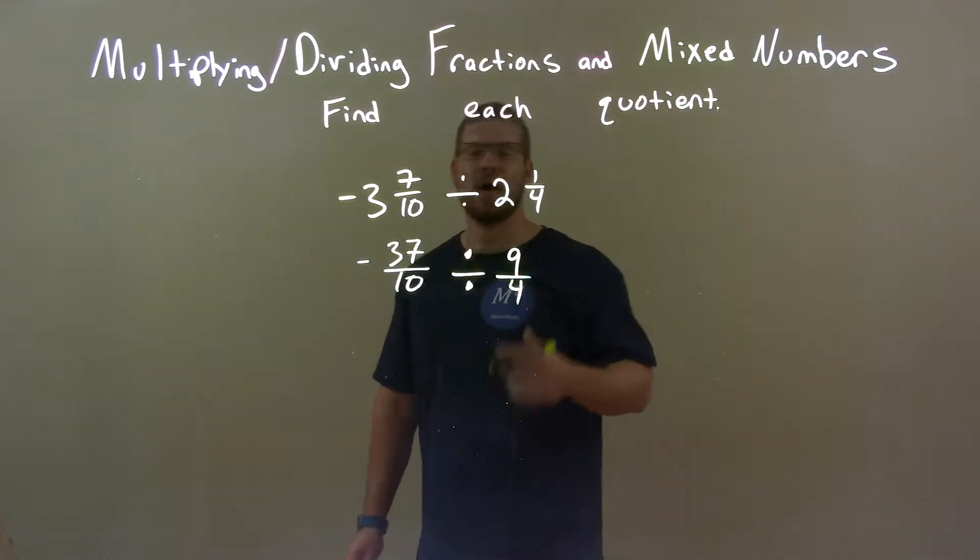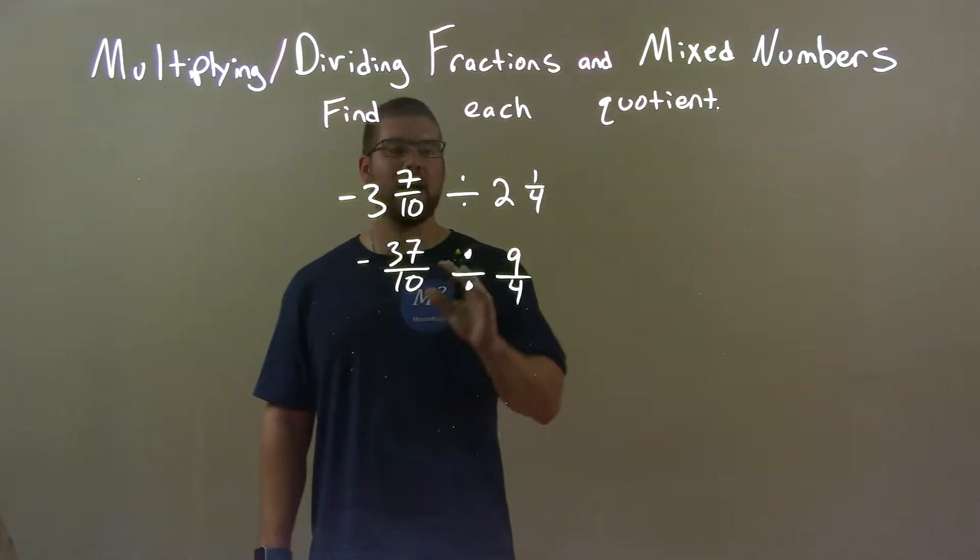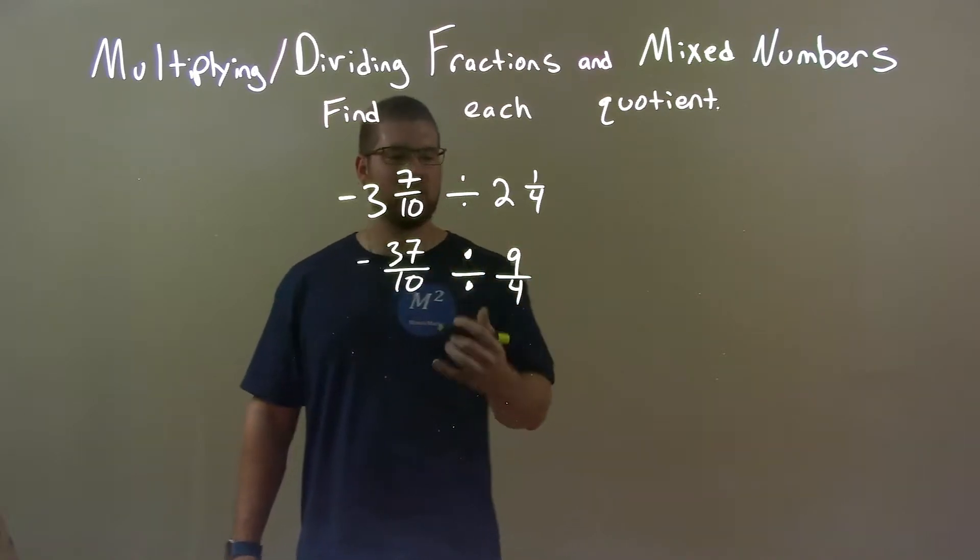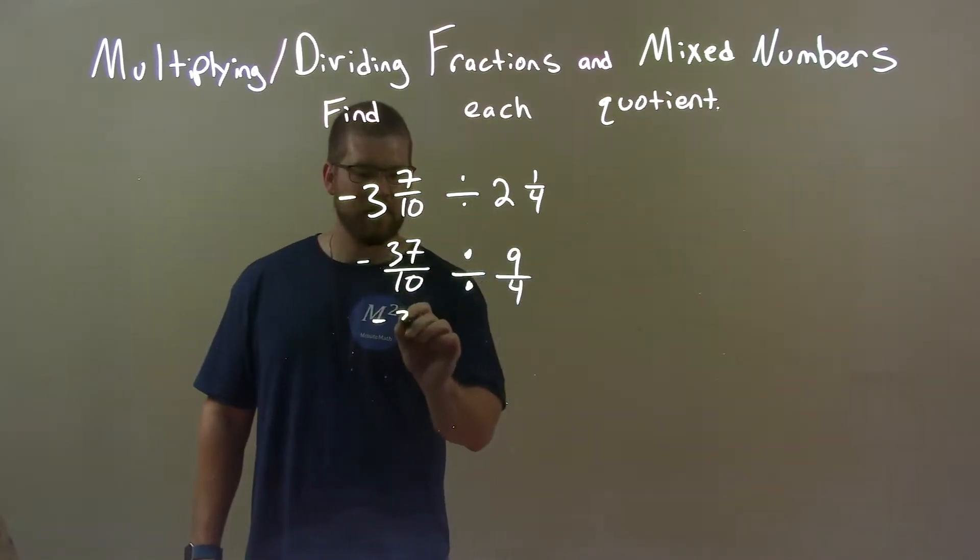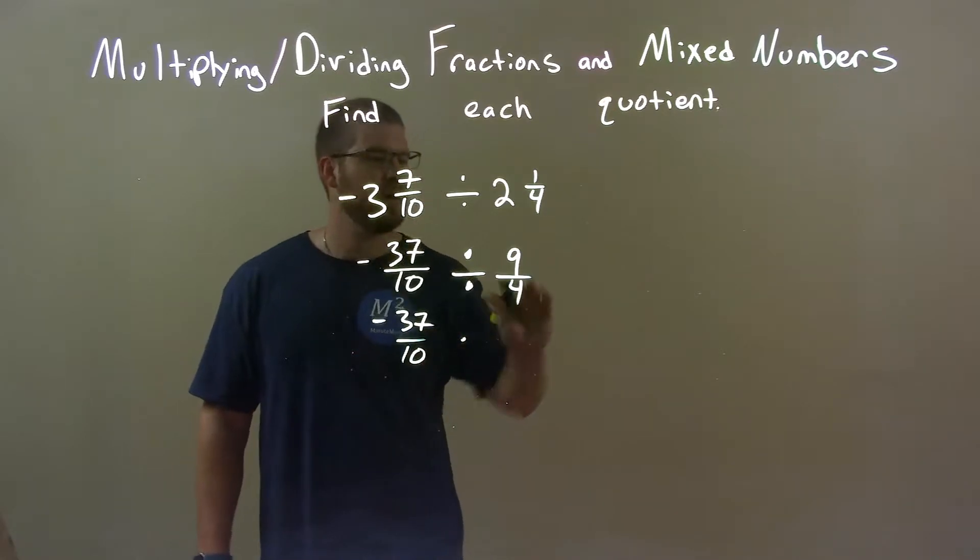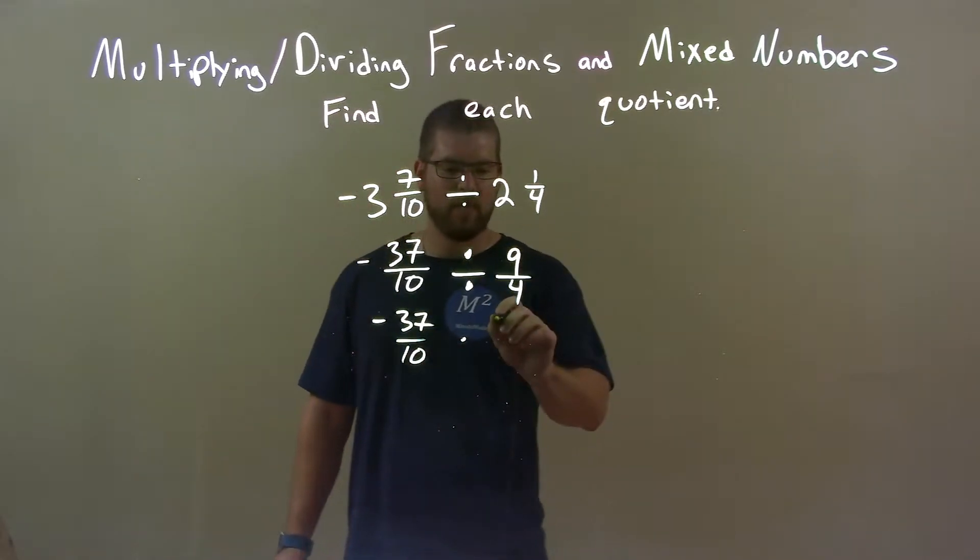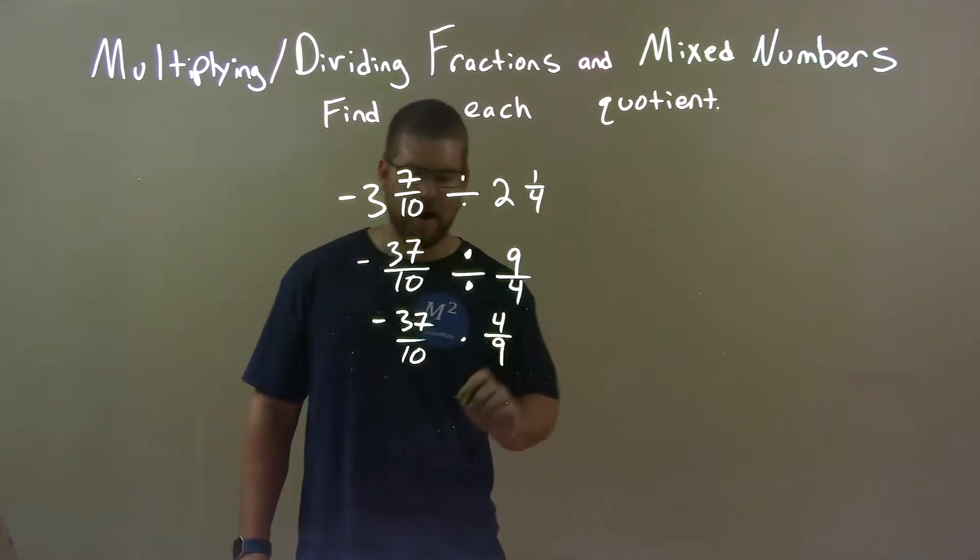Again, if you're like me, I do not like division. I like multiplication. So I convert this to be a multiplication problem. Negative 37 over 10 times, well, 9 fourths. Flip that, we have 4 over 9.